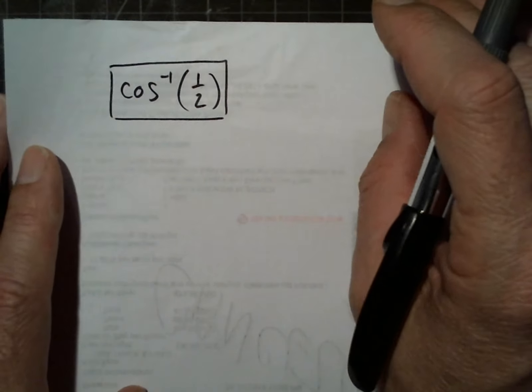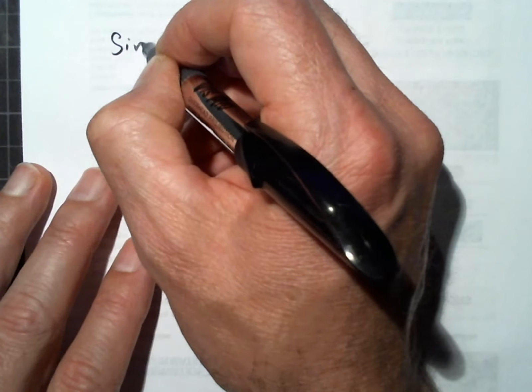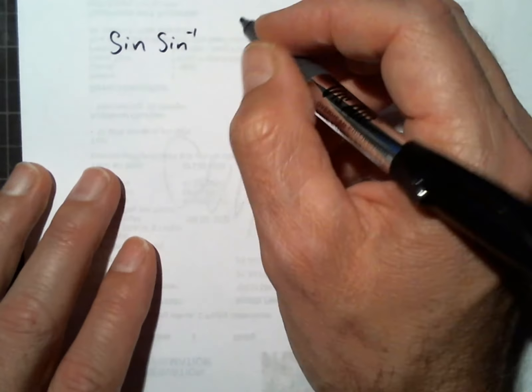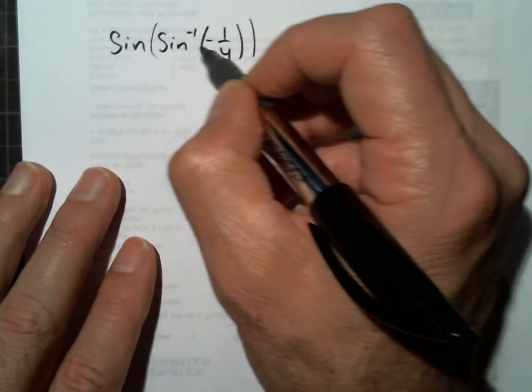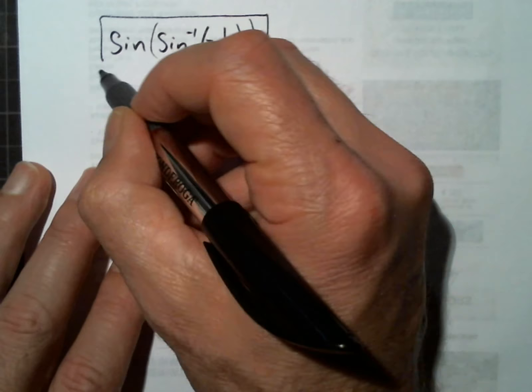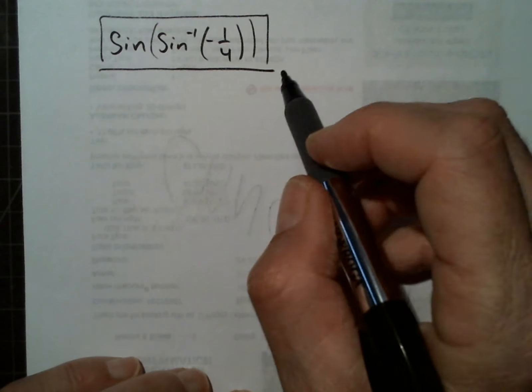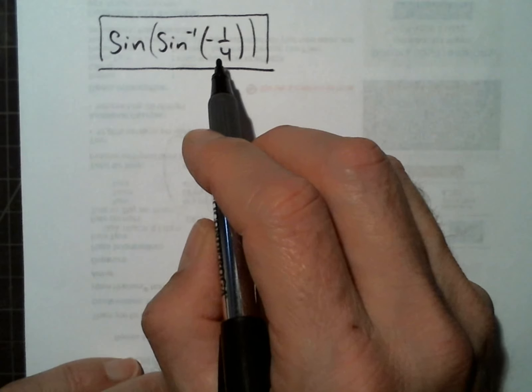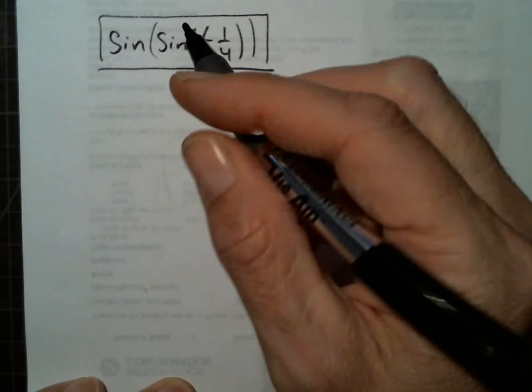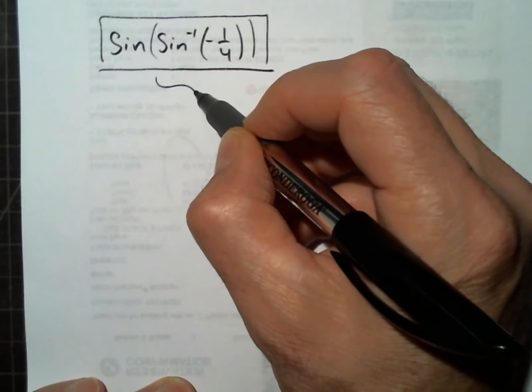We don't have to do that full process every time — it turns out for some problems you're allowed to just cancel and the answer is, for example, negative 1/4. But you have to know when the shortcut works. Shortcuts get you in trouble if you don't know why they work, so let's not use it and instead work through the problem carefully.